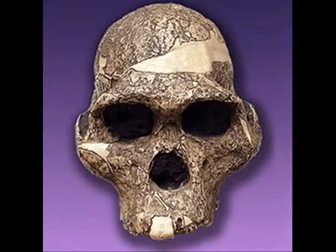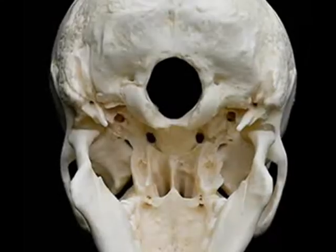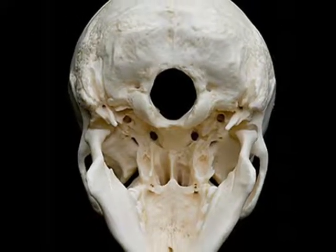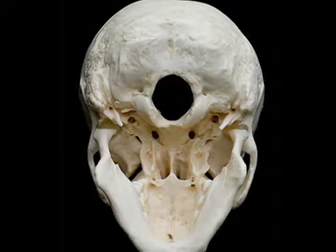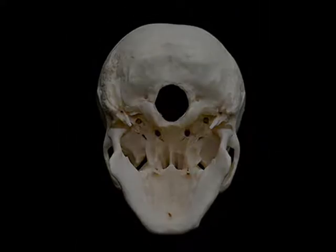This is Australopithecus africanus, an extinct hominid that lived two to three million years ago. One indicator of human evolution that sets us apart from chimps and other apes is bipedalism — the fact that we walk upright on two legs instead of dragging our knuckles and walking on all fours. We can determine if a species is bipedal or quadrupedal by noting the location of the hole on the underside of the skull, where the spine comes through to connect the brain to the rest of the body.